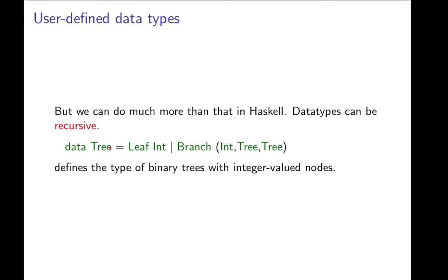The data type tree has the following values. Values can be leaves with an integer associated to them, or they can be branches with an integer and two trees, the left subtree and the right tree associated with them.